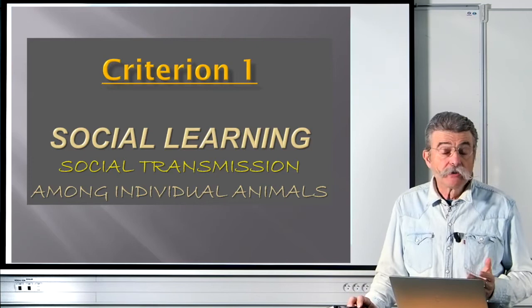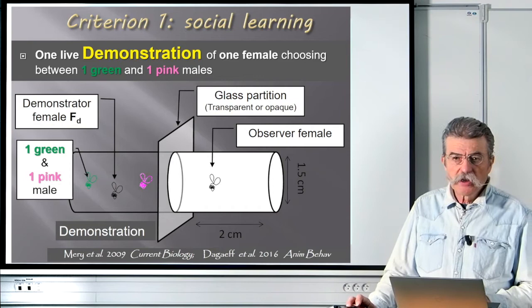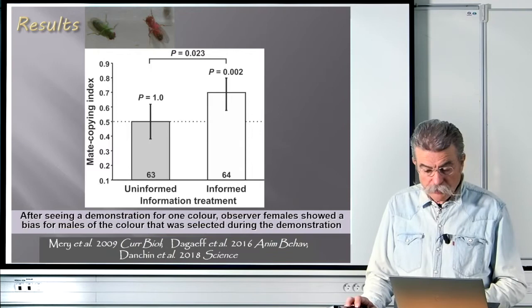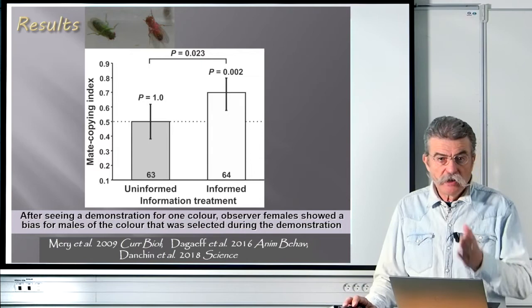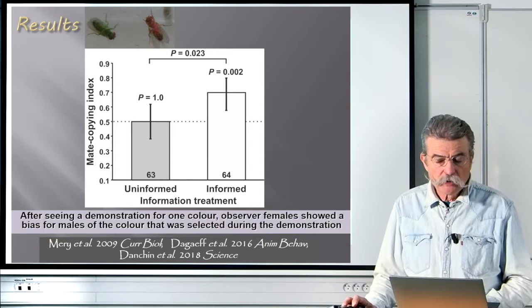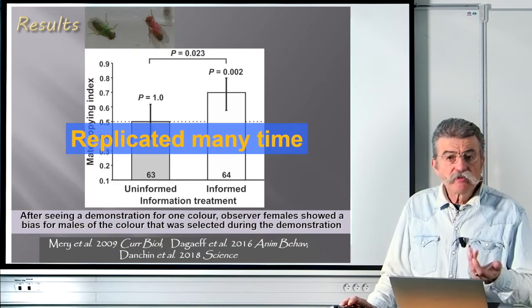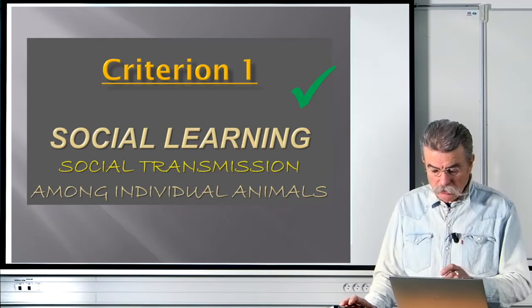The first criterion is the essence of culture: it should be transmitted, learned socially. With this device we were able to show that after seeing a demonstration for one color, observer females showed a bias for males of the color selected during the demonstration. Females who did not see the demonstration showed no bias, while those who did showed a preference for the male color preferred by the demonstrator female. This result has been replicated many times, so criterion 1 is fulfilled — Drosophila melanogaster can learn their sexual preferences socially.